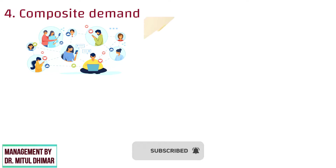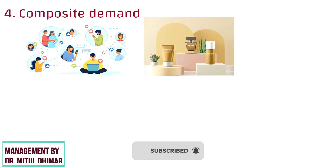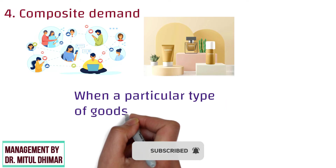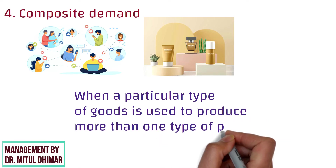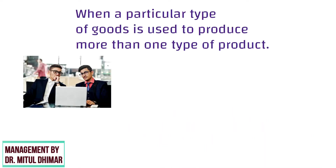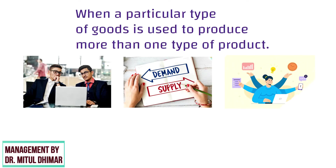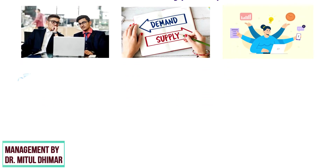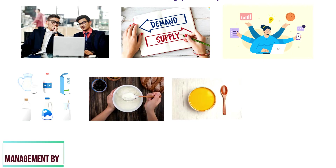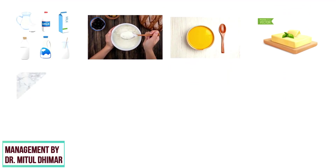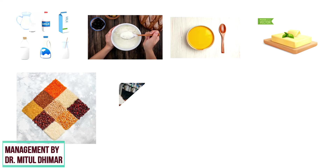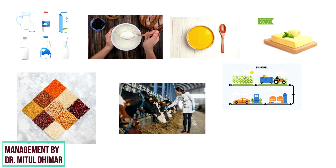Number 4: Composite Demand. Composite Demand happens when there are multiple uses for a single product. In other words, when a particular type of goods is used to produce more than one type of product — when goods are demanded to satisfy several needs at a time. For example, milk is used for making curd, ghee, butter, etc. Various cereals are used as animal feed, ethanol, and also for feeding.